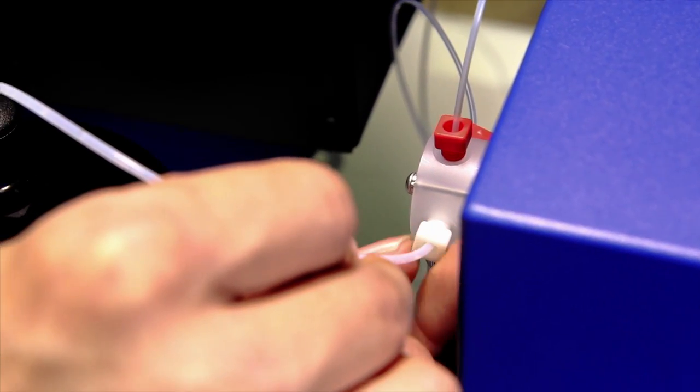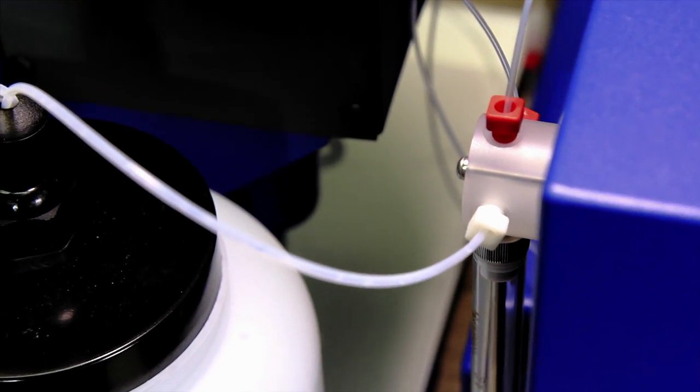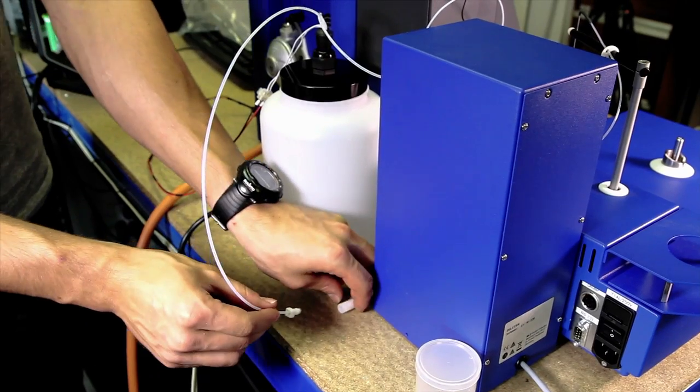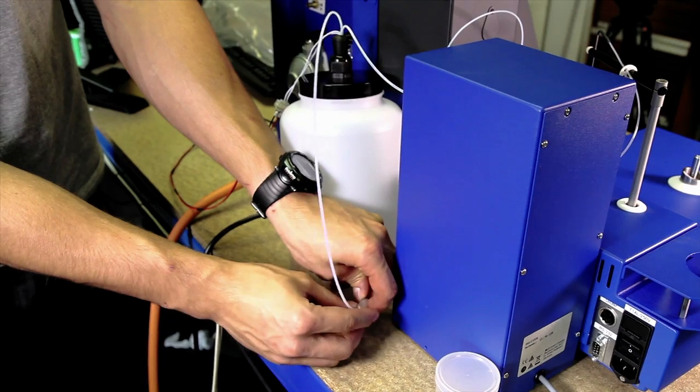Connect the suction from the dilution bottle to the right of the dual loop valve. Connect the wash suction connector to the diluter bottle.